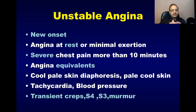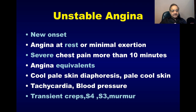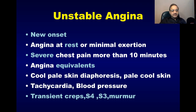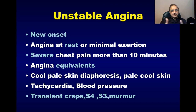All these conditions put load on the myocardium, they increase myocardial demand, and the patient feels chest pain. The pain is more severe, lasts longer — more than 10 to 20 minutes — and there is radiation to a new site. So the patient who was having chest pain only behind the sternum now starts feeling pain radiating to the arm, neck, or both arms, suggesting this patient is unstable.